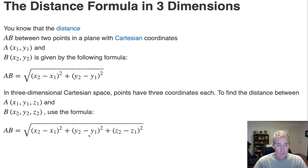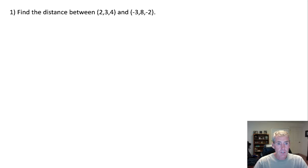When you're in three dimensions you do the same thing: subtract the x's and square it, subtract the y's and square it, but then you also need to subtract the z's and square it. Let's take a look at an example.